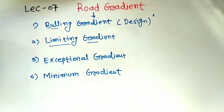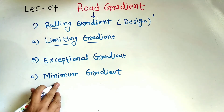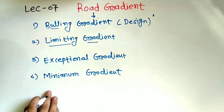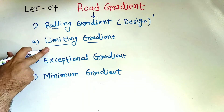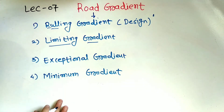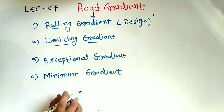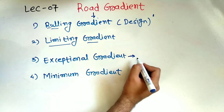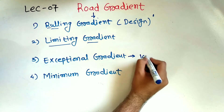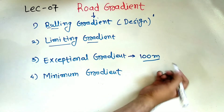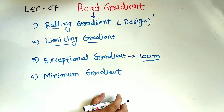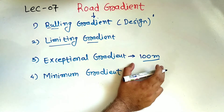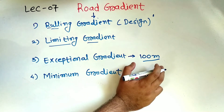Now there are some cases where there is an unavoidable situation — where we adopt a gradient less than the minimum gradient or more than the limiting gradient. It is known as the exceptional gradient. For the exceptional gradient, the maximum stretch allowed is 100 meters; beyond 100 meters we cannot adopt it.